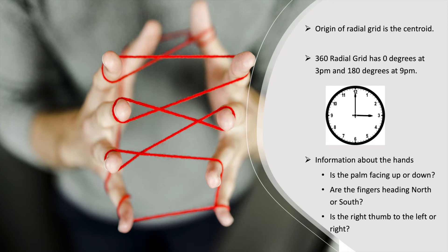There are also three information pieces about the hands that we put together to organize scenarios of hands into categories: is the palm facing up or down? Are the fingers heading north or south? And is the right thumb to the left at 9pm or right at 3pm?